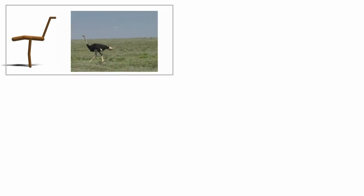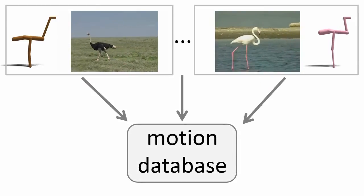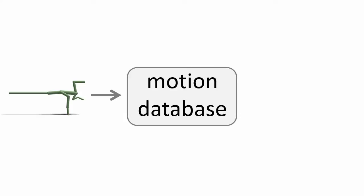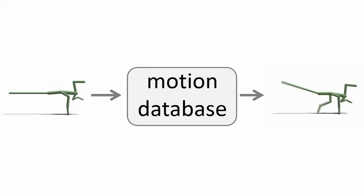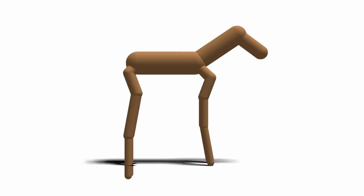For each animal we know what it's shaped like and how it moves in the real world. Since we have this form and motion pairing for a bunch of different animals, we compile them all into the motion database so that, given a new creature, we can look for animals with a similar shape and make an educated guess about its motion. Before describing how that's done, I need to cover the basics of gait synthesis. We use an approach called space-time constraints, because it's pretty easy to apply to a wide range of different creatures.